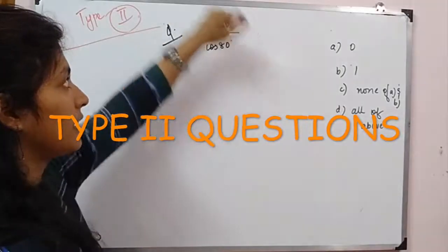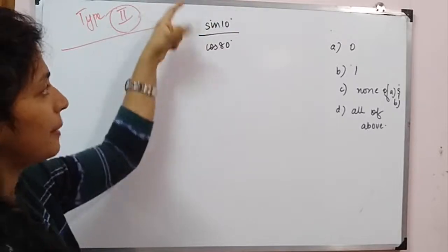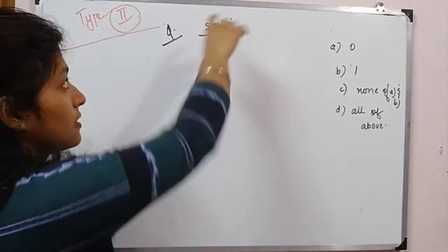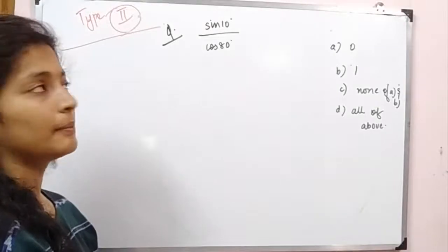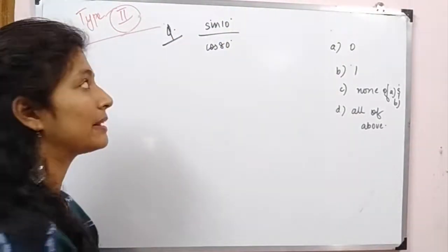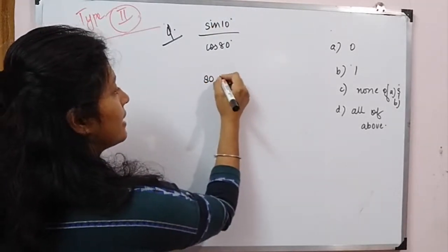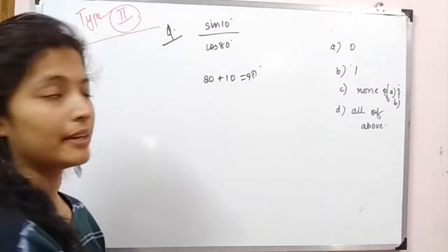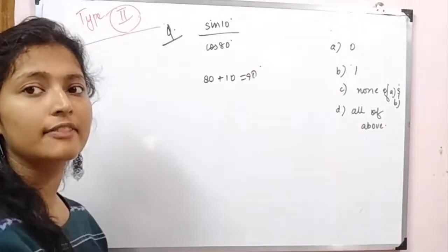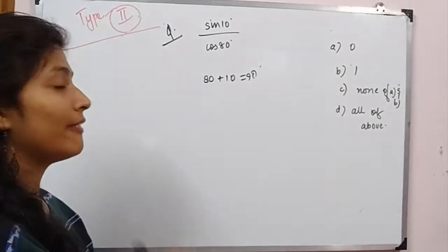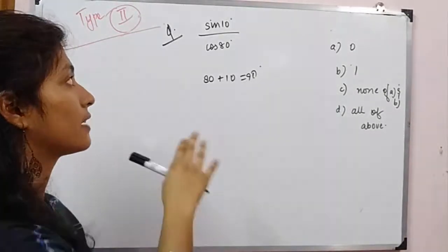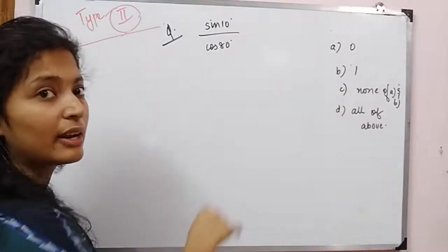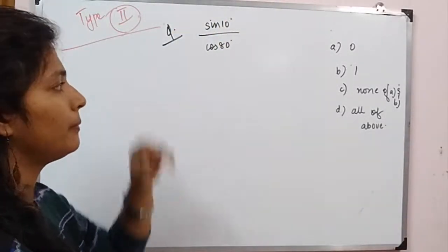Now let's see — the question given is: sin 10° upon cos 80°. We have to find this value. How will Type 2 questions be? An expression is given where the angles will be complementary — 80 plus 10 equals 90 degrees, so they are complementary. One thing is the angles are complementary. The other thing is we don't have the value of sin 10° — it doesn't appear in standard tables, so we don't remember the value of sin 10°.